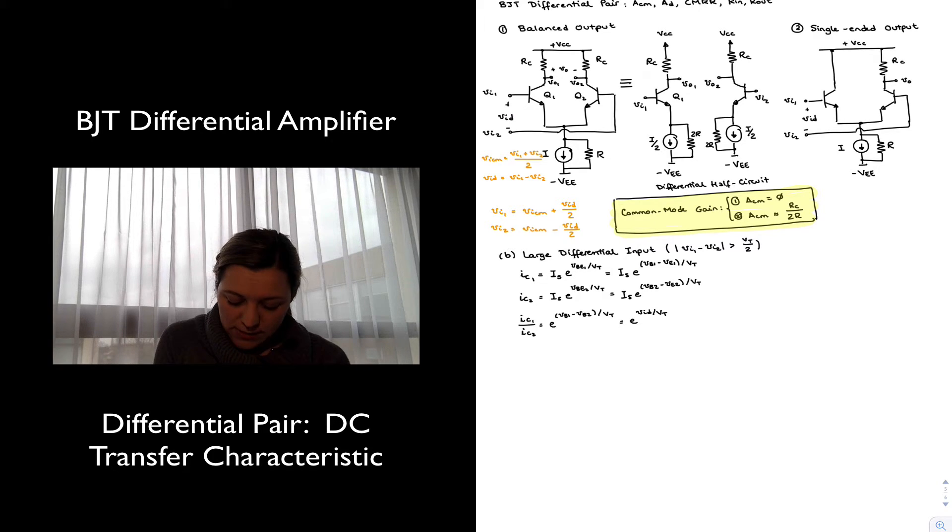I also know that IC1 plus IC2 must be equal to the overall current flowing through the tail branch, which is equal to I as labeled in the circuit. So I can, based on that equality, come up with normalized values for IC1 and IC2. By normalized, I mean just divided by the overall current. So IC1 divided by I, and IC2 divided by I.